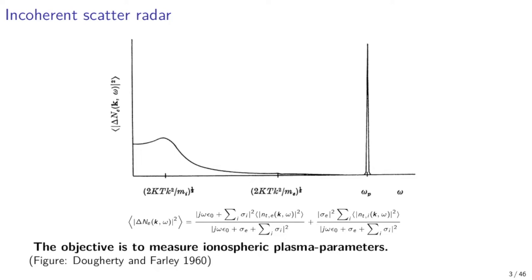The figure above shows the two main features of an incoherent scatter spectrum. On the left-hand side, you can see the portion that corresponds to ion-acoustic waves. This part contains information about electron density, electron temperature, ion temperature, ion velocity, and ion mass. This feature of the spectrum is called the ion line.